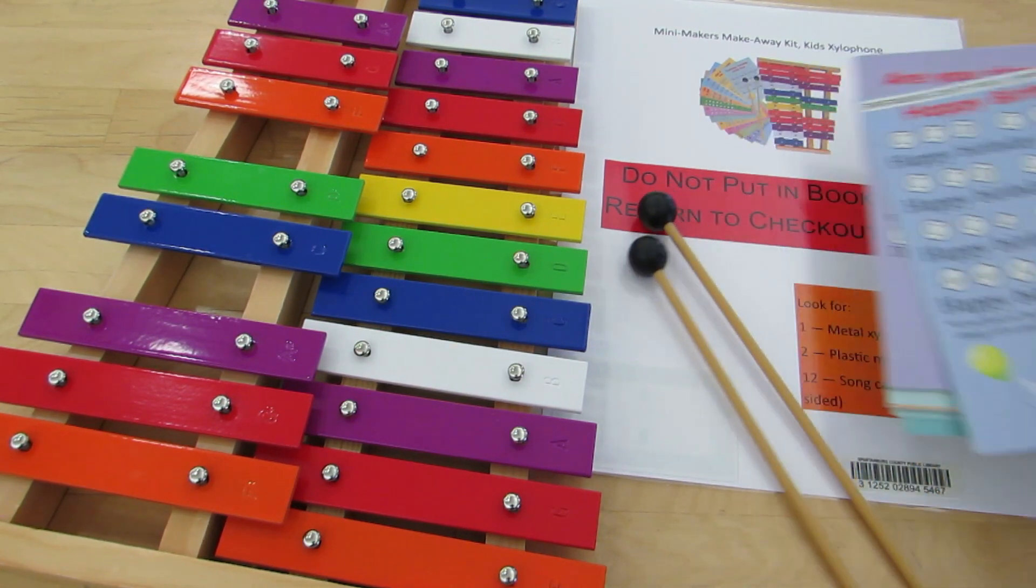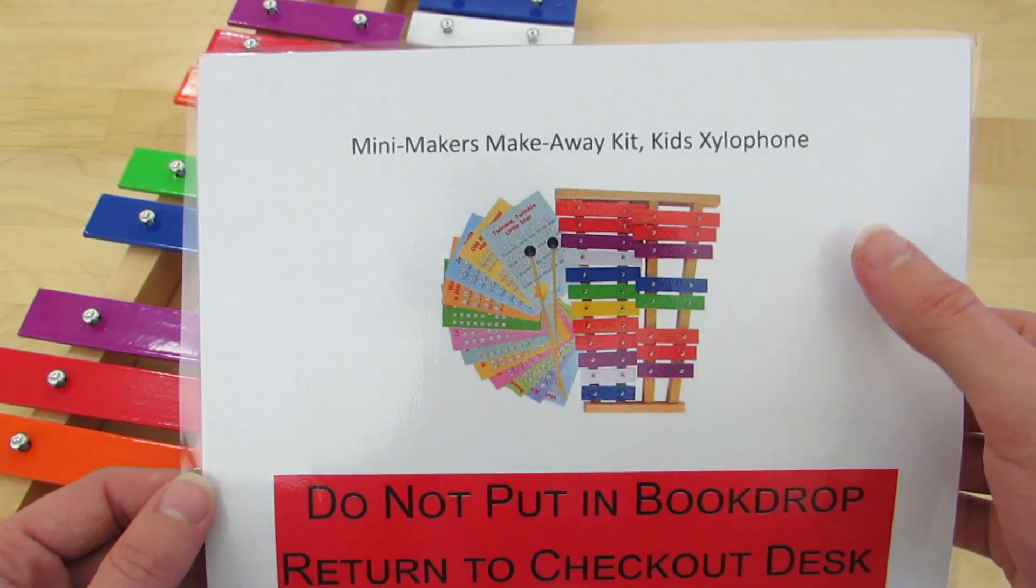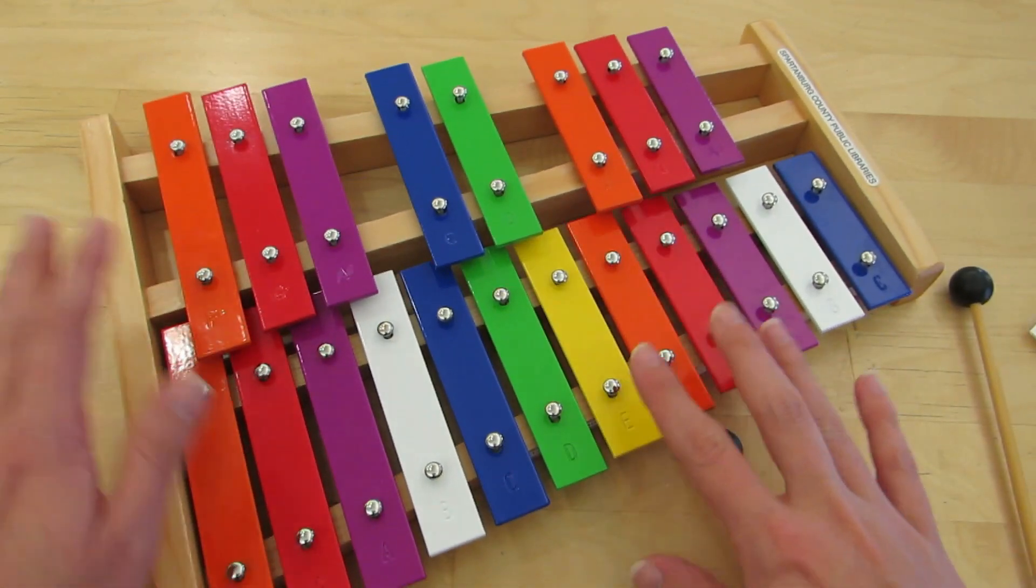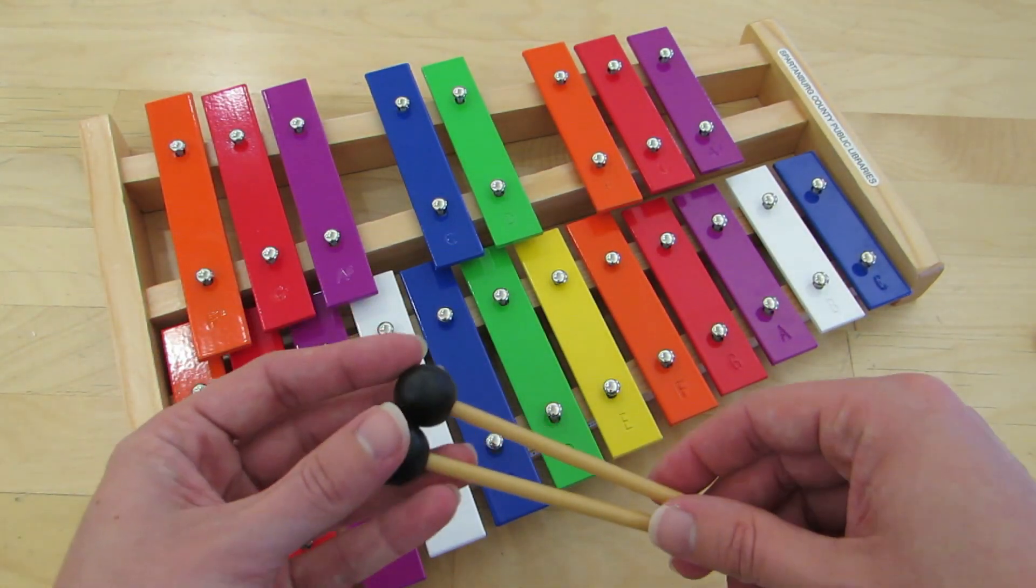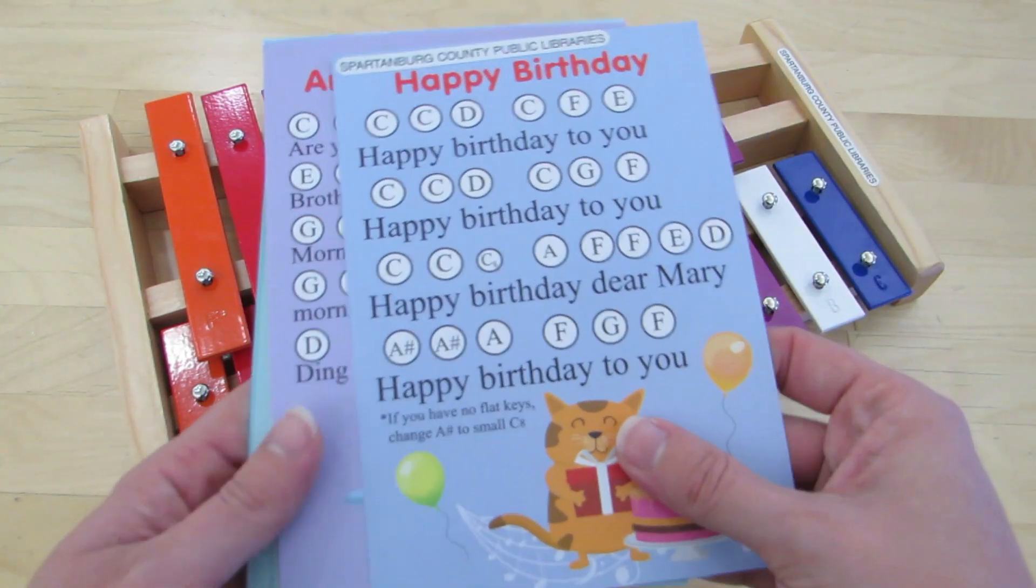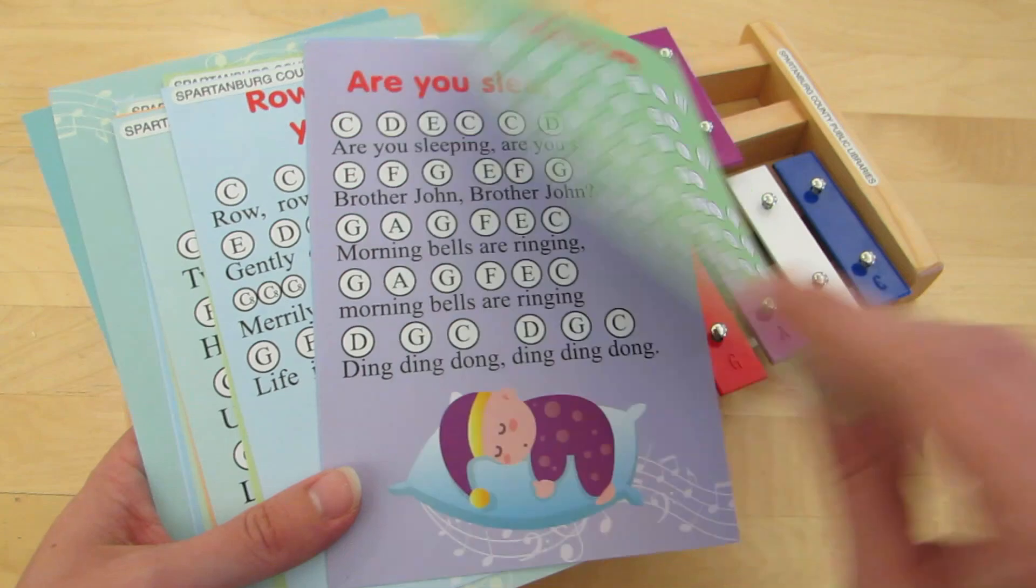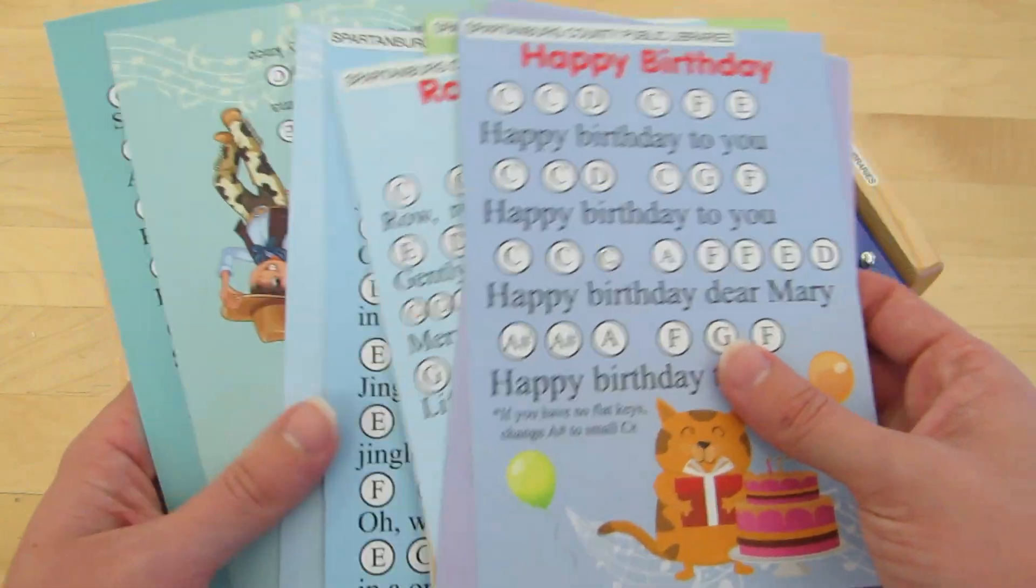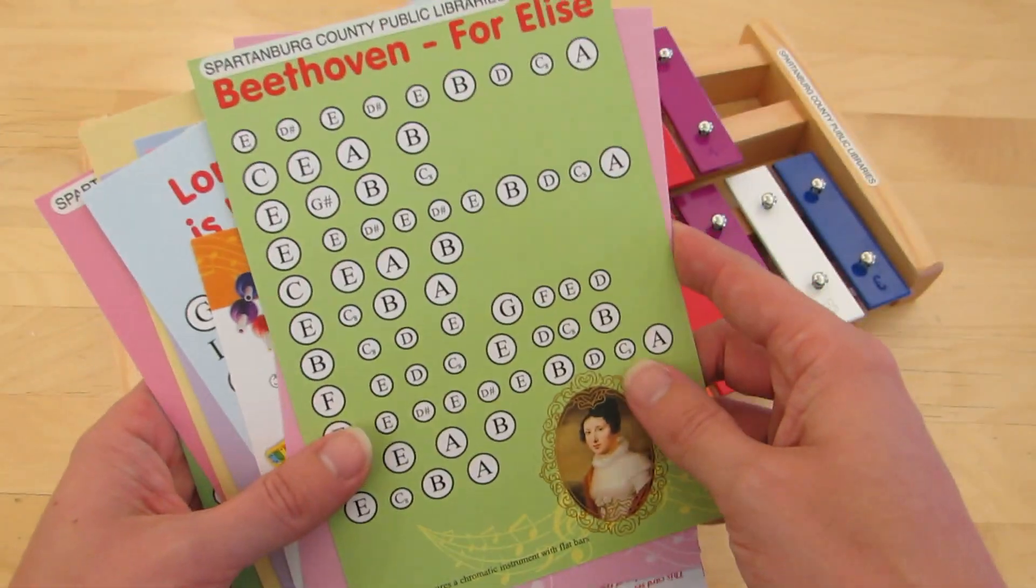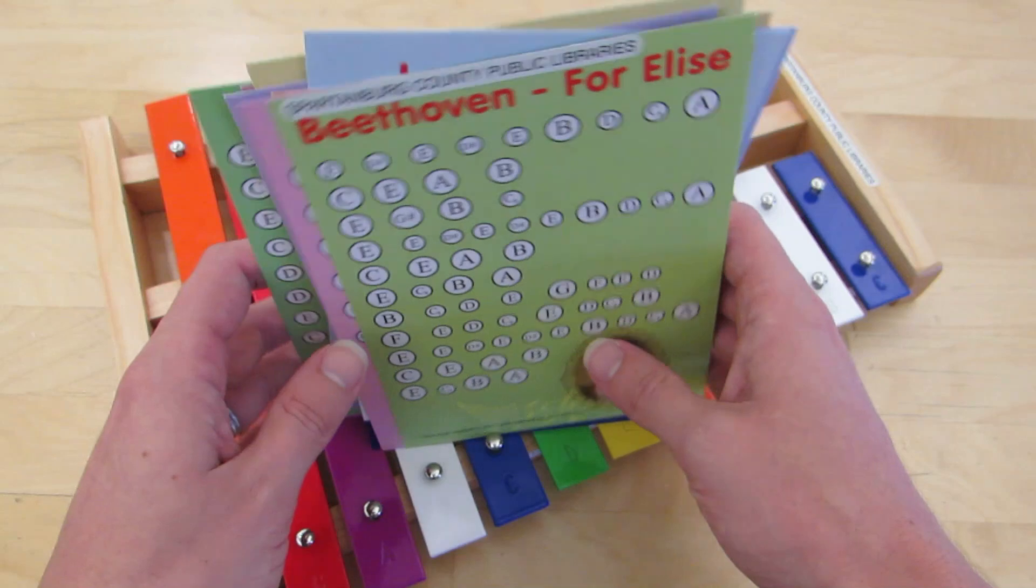Next, we're going to move on to our xylophone. This is a mini maker xylophone. We have an adult size. This is the kid size. The kid size is color-coded and not quite as big. So the kit comes with these mallets. It also comes with 12 double-sided song charts that have the letters written out of what each note is so that your kid can look at the letters on the xylophone and play. So lots of popular, fun songs there. And I'm going to demonstrate what it sounds like just so you'll know before you check it out how high-pitched it's going to be.